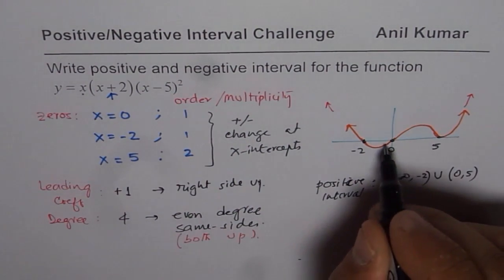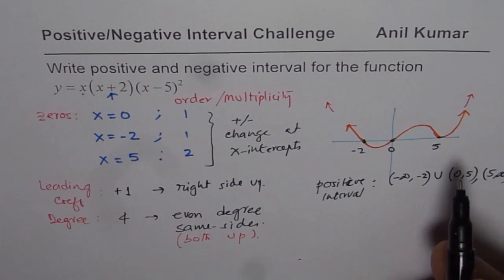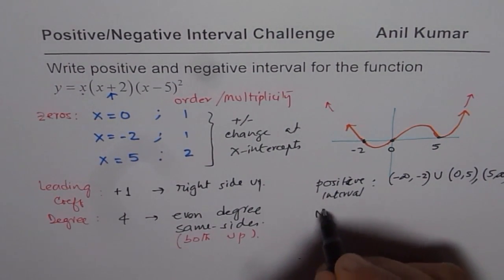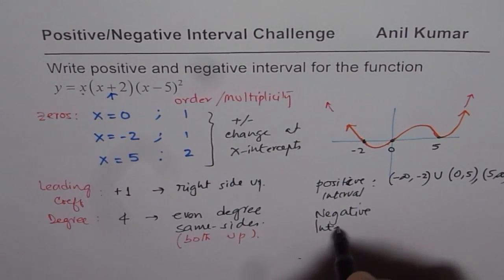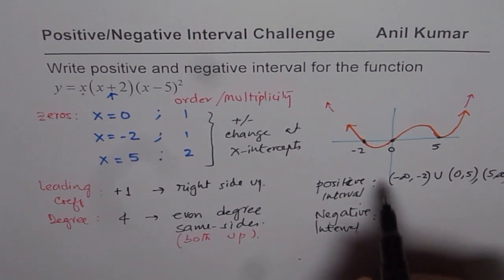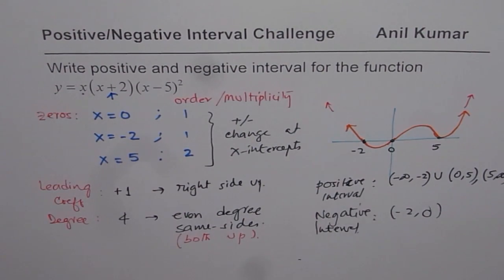Do not include the zeros. And then from 5 to infinity thereafter. As far as the negative interval is concerned, they are between minus 2 and 0. So it is between minus 2 and 0. This quartic function has negative interval. So this is how you could write positive and negative intervals.